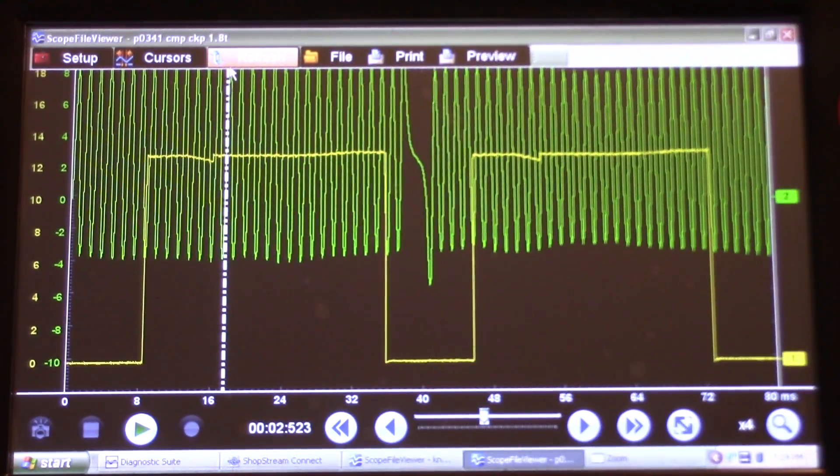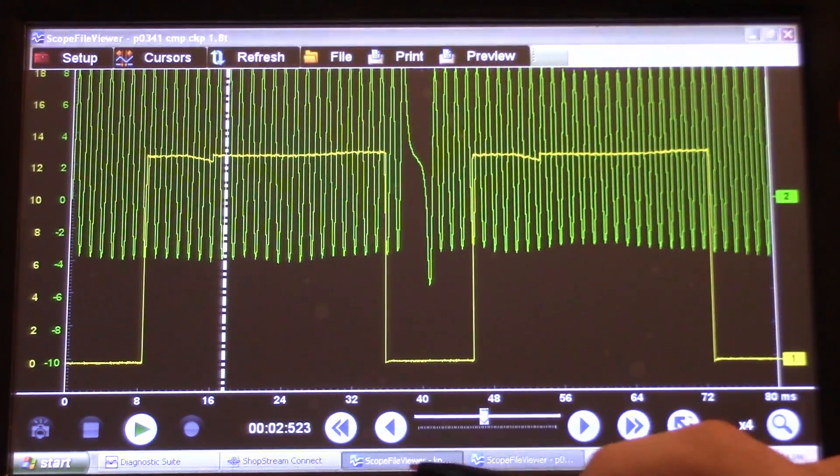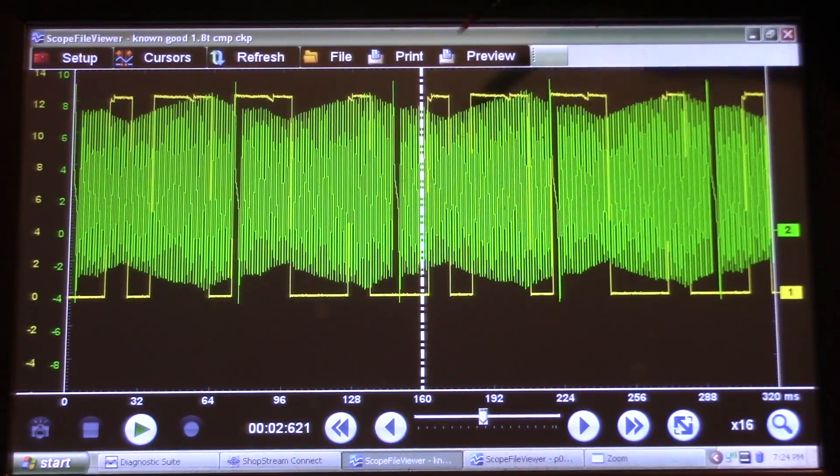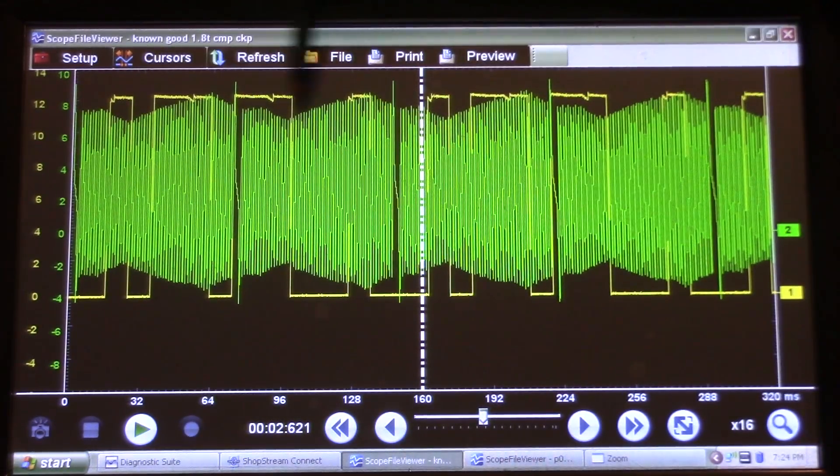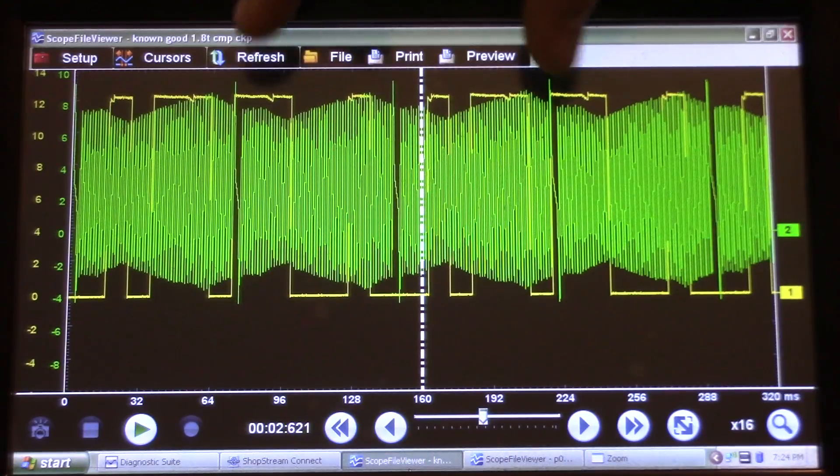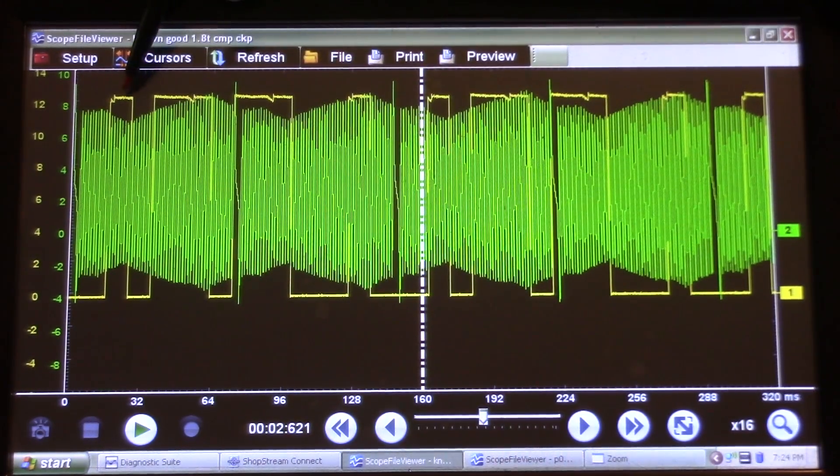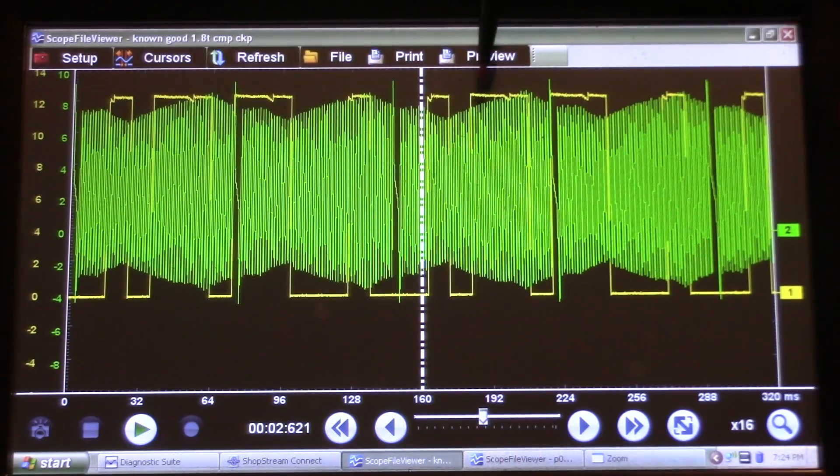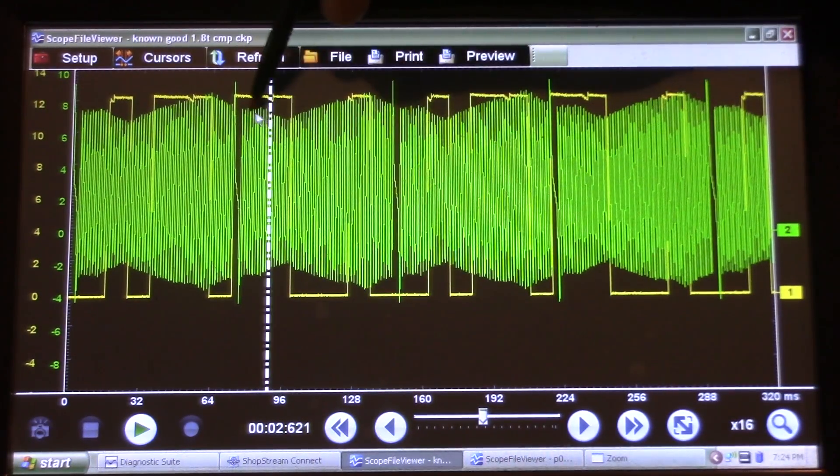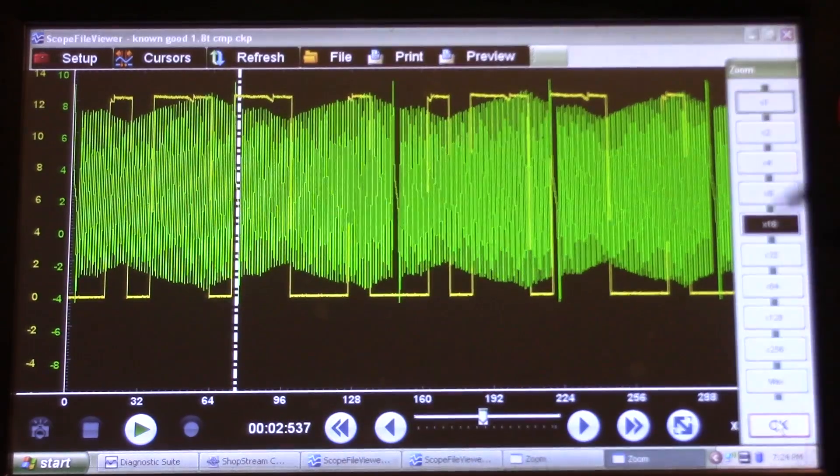So at the time I didn't have a known good, now we do. Let's go to the known good one. And the same thing, 720, these two right here. There's the small square, two big squares, small square, two big squares. So we'll move this over, we want to focus on this crank sync right here.